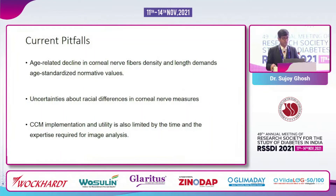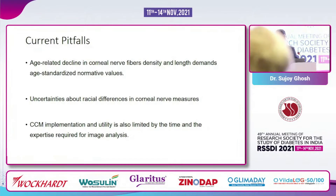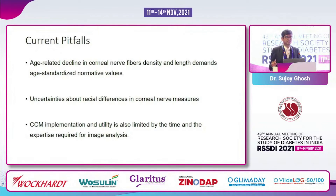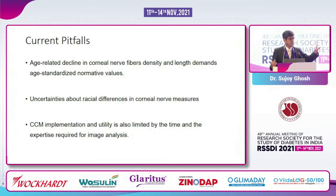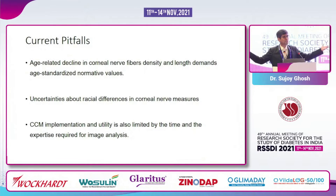Of course, there are pitfalls. Do we have data on what happens as we age, because there might be age-related changes to the nerve? Do we have ethnicity-specific data, gender-specific data, racial data? We are still a long way to go before we can say start using this in your clinic from tomorrow — because this machine costs 42 lakhs. As instruments go, it's just like the insulin pump when it first came.